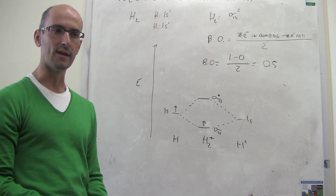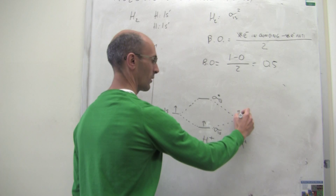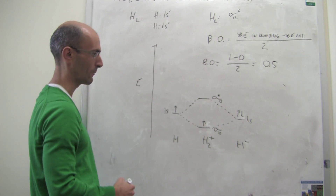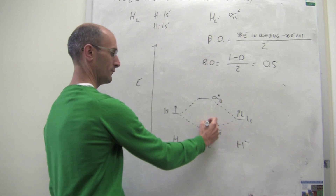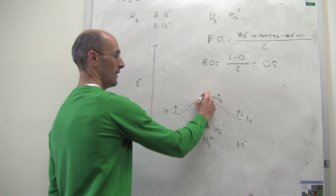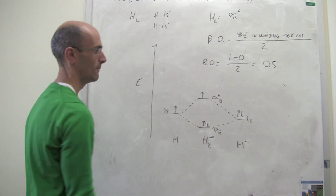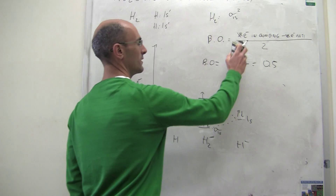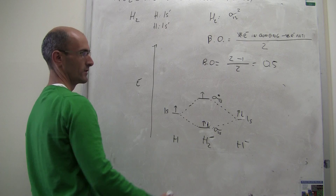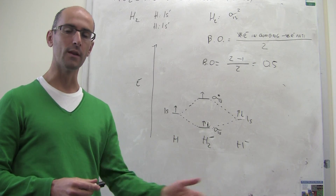We can also ask what happens with the H2- molecule, which has one more electron than H2. Now you have a total of three electrons to place in the molecular orbital diagram. Two electrons go into the sigma bonding orbital, and the third must go into the sigma-star antibonding orbital. The bond order for H2- is two bonding electrons minus one antibonding electron, divided by two — also 0.5. So H2 has a stronger bond than either H2+ or H2-.